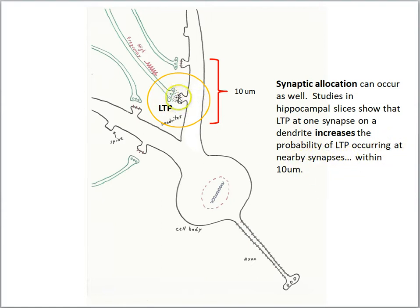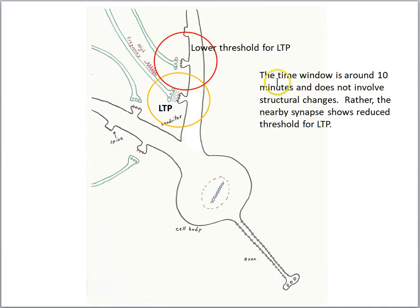So if LTP just happened here, that increases the probability of LTP happening here within a short distance. The time window is around 10 minutes and it does not seem to involve structural changes, rather it appears to be a reduction in the threshold for LTP.